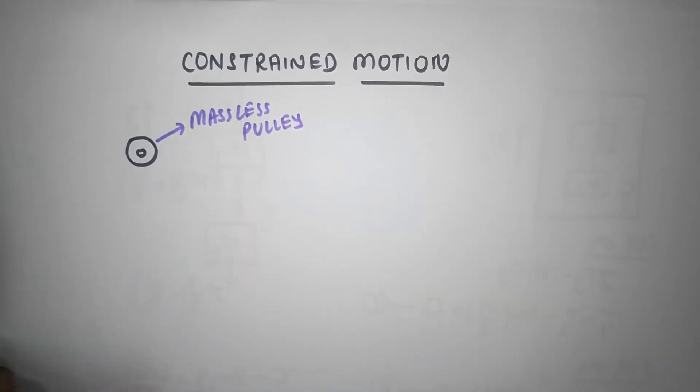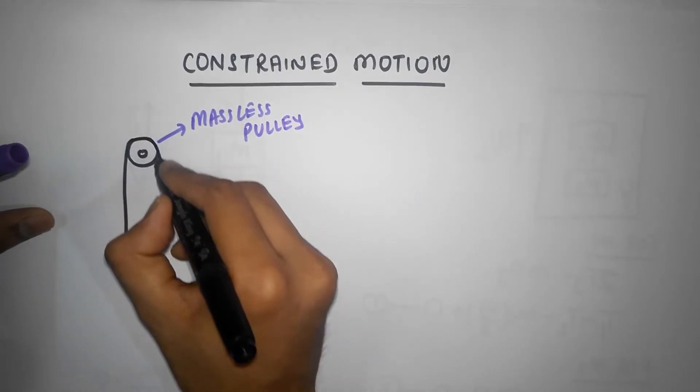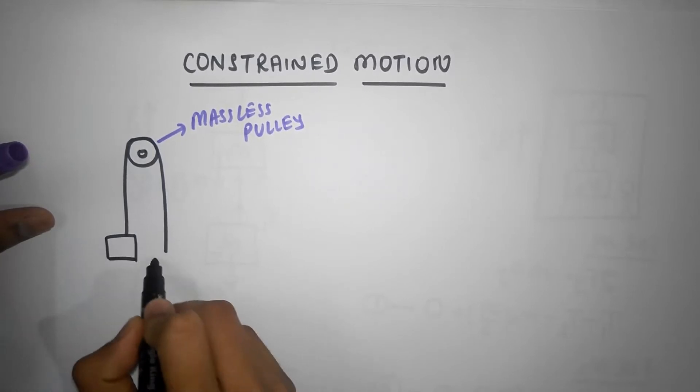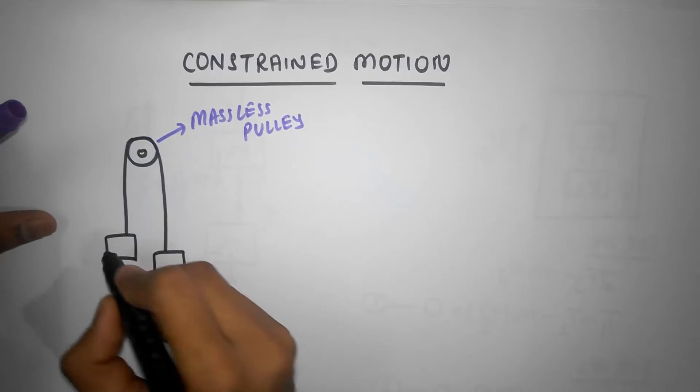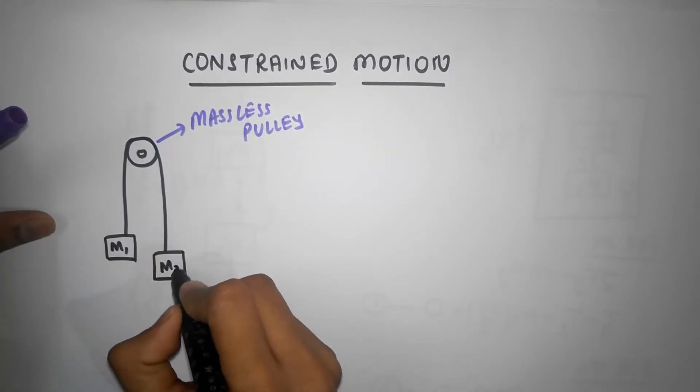And you have a massless string that goes over it like so, and attached to it two blocks. Let's call this block as M1 and let's call this block as M2.